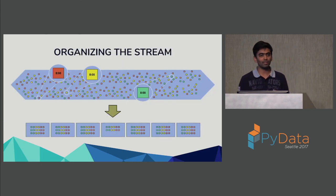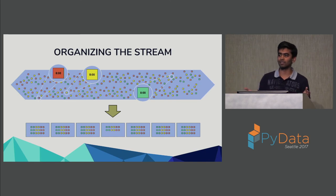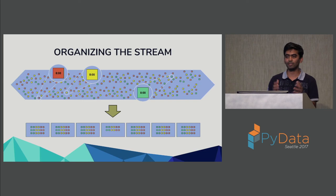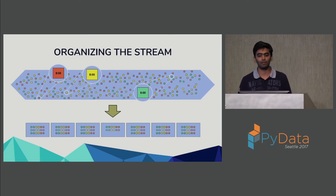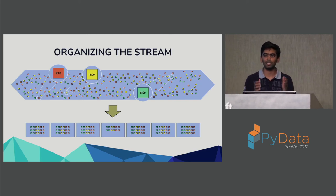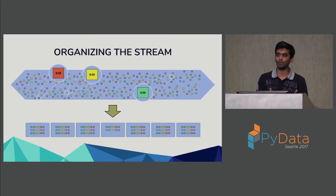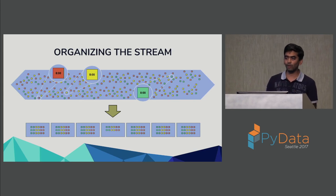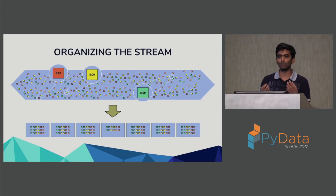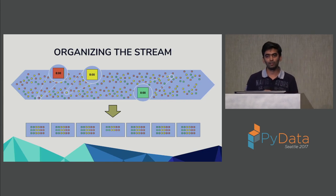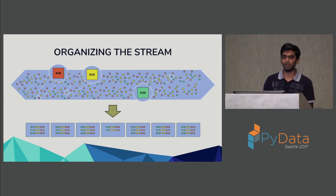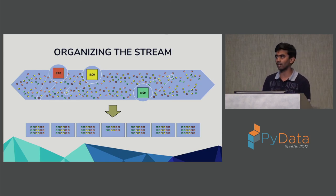In most streaming pipelines you bucket your data, calculating values per hour by bucketing data from 12 to 1, 1 to 2. But this is based on when you received the data, not when the event happened. At Beam, we try to differentiate between when the event actually happened and when you're actually processing this data.